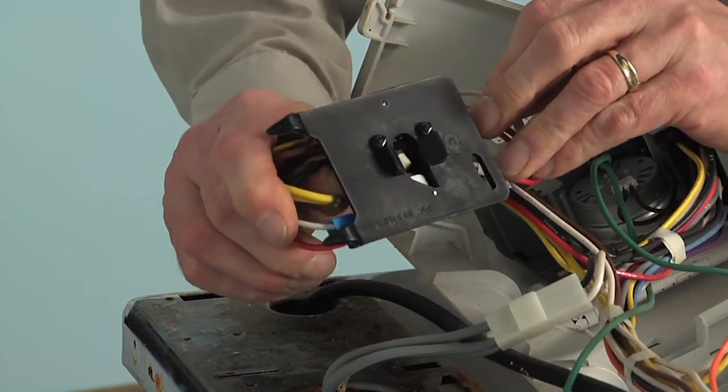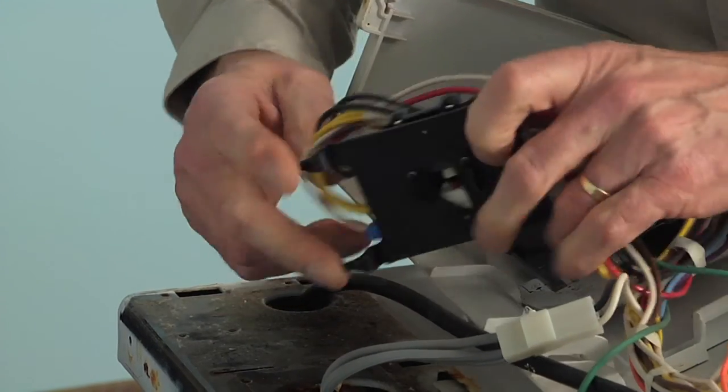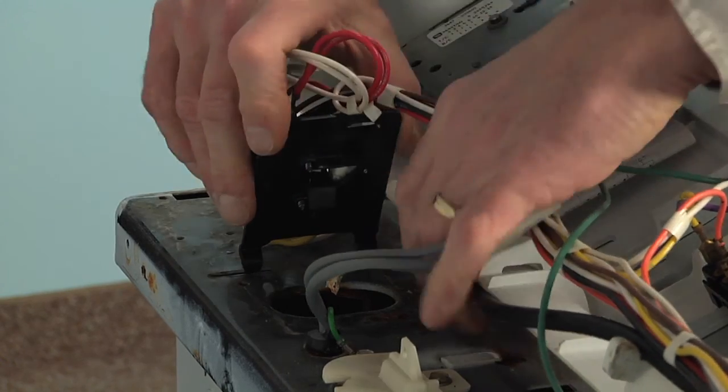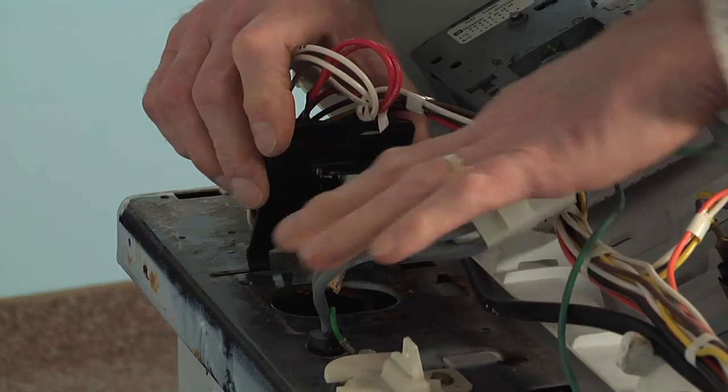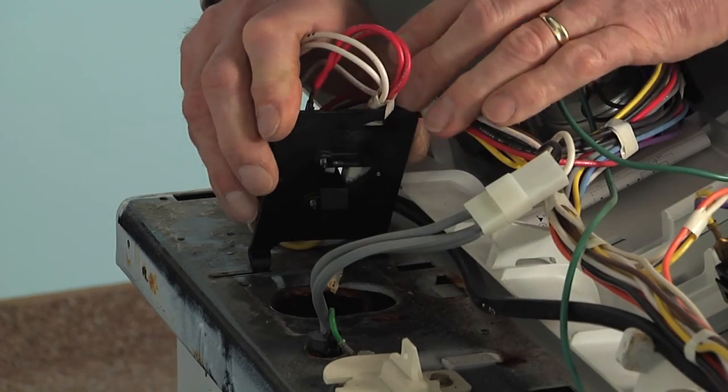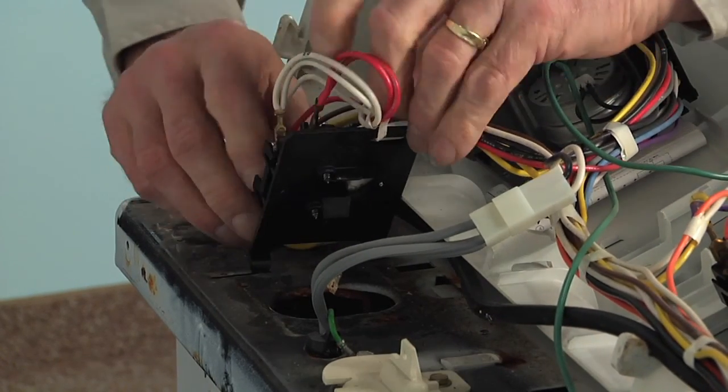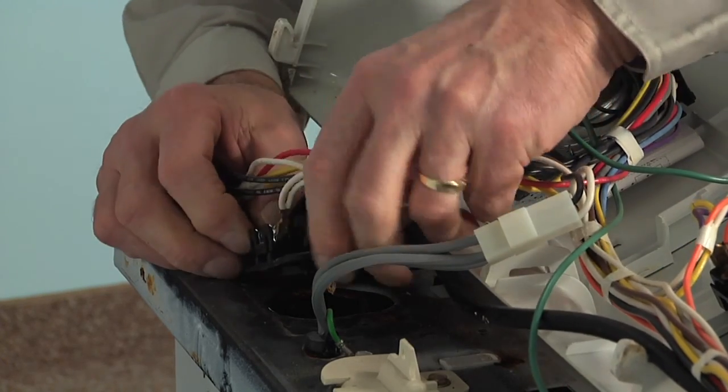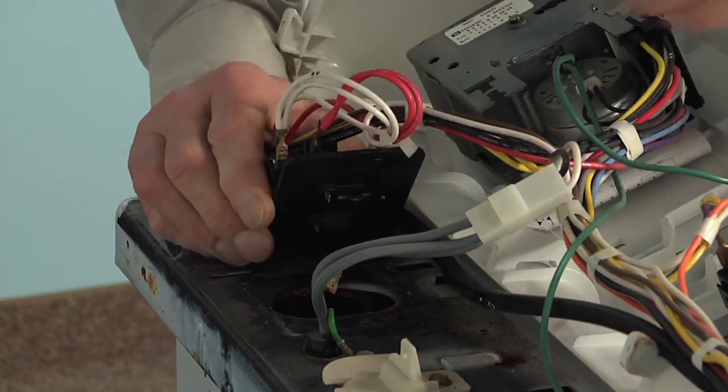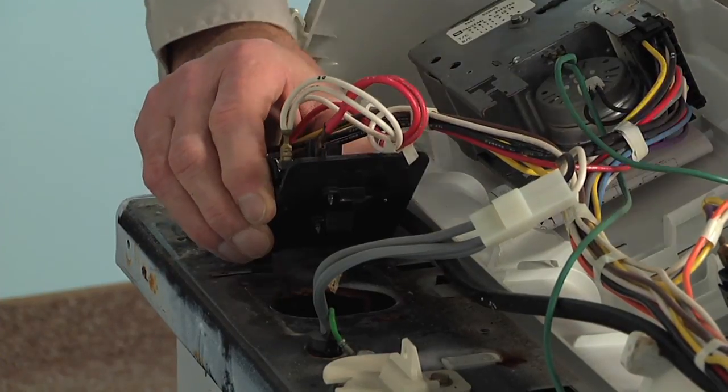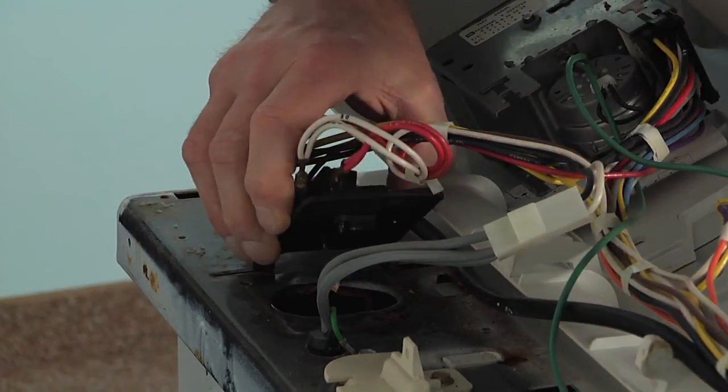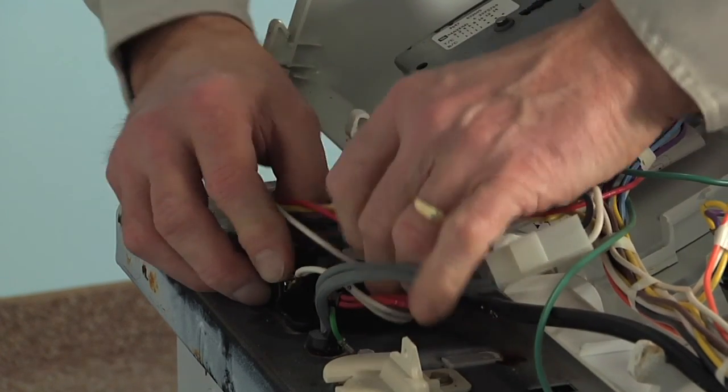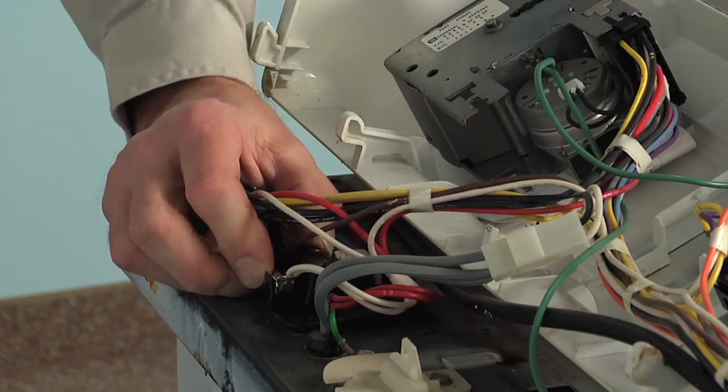Now when we reinstall the new assembly, we want to make sure that we have those two tabs fit down into those slotted openings, and then we're going to line up that unbalanced lid switch lever into the center of the opening. As we lower it down into position, you'll see where it will come up through from the top. As we lower that down into position, we'll want to make sure that it fits into that slot on the bottom of the lid switch assembly, then it should lay flat.